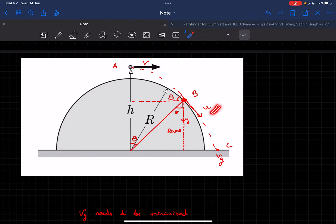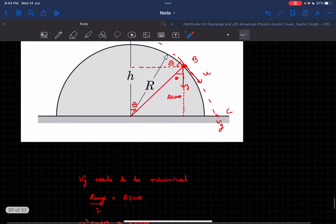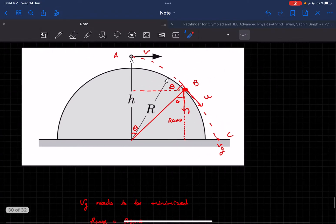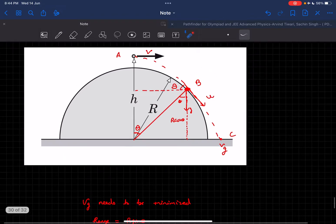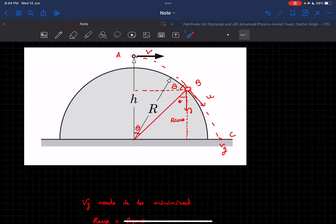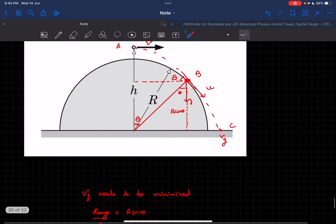To minimize vg, let's reverse the velocity u. The projectile would then continue on this path, and at the highest point its velocity would be v. In that case, the horizontal distance from launch to the dome would be half the range of that projectile.